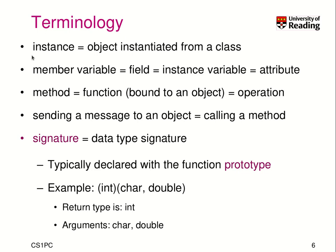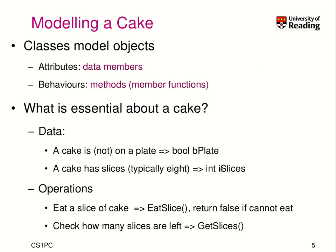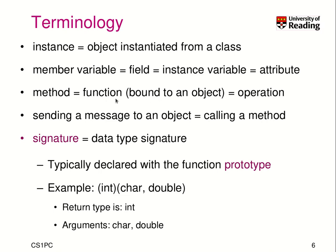In terms of terminology: an instance is an object instantiated from a class — from a blueprint. A member variable is sometimes referred to as a field, instance variable, or attribute of a specific object. A method is a function — a member function — bound to an object, often also called an operation. When we send a message to an object, that means we call a method, depending on context. A signature is the data type signature of a function call, typically declared with a function prototype — for example, a function returning integer but taking character and double as arguments.